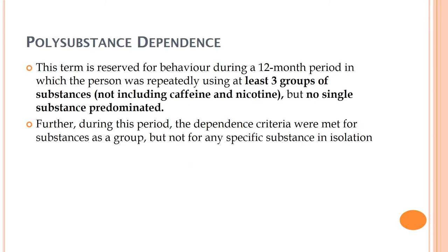'Poly substance dependence' is a term reserved for behavior during a 12-month period in which a person repeatedly uses at least three groups of substances, not including caffeine and nicotine. Out of all three, no single substance is being used predominantly. The period is 12 months and at least three groups of drugs must be used, with no one substance being predominantly used.